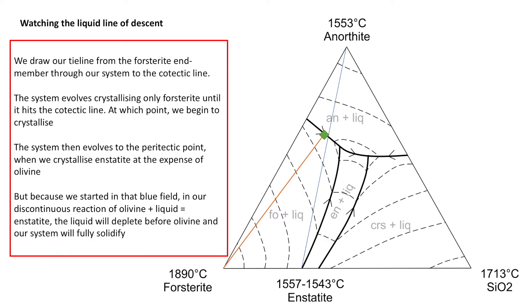The system is going to hit that cotectic line and we're going to start to crystallise both forsterite and anorthite. Our system will then proceed to evolve and we'll eventually hit that peritectic point. At that peritectic point, we're going to undergo a discontinuous reaction of solid plus liquid equals enstatite — in this example, olivine plus liquid equals enstatite. That reaction will continue until one of the reactants has been entirely exhausted: either olivine or liquid.